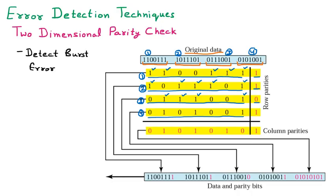Checking the third row: one, two, three, four — already an even number, so zero is added. Then checking row four: one, two, three — odd number, so one is added. This side is now complete and is called the row parity.